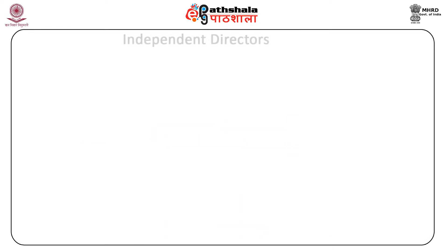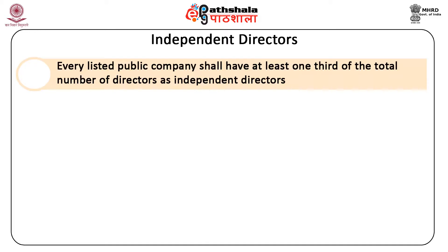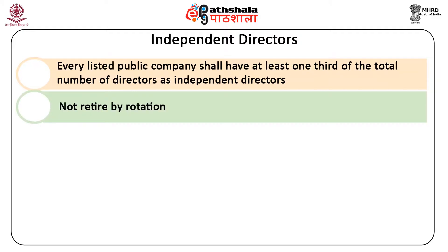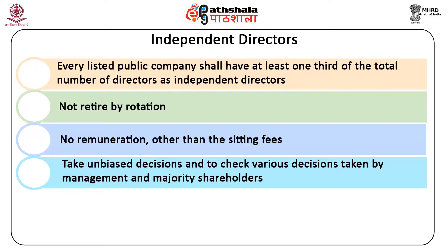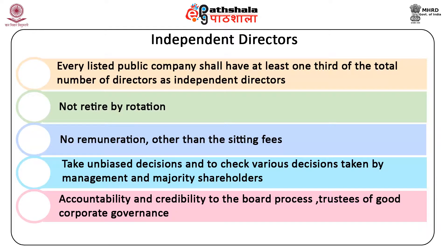Independent directors: Section 149, Subsection 4 provides that every listed public company shall have at least one-third of the total number of directors as independent directors. Such directors shall not retire by rotation. They shall not be entitled to any remuneration other than sitting fees, reimbursement of expenses for participation in the board meeting, and profit-related commission approved by the members. The whole and sole purpose behind introducing the concept of independent directors is to take an unbiased decision and to check various decisions taken by the management and majority shareholders.